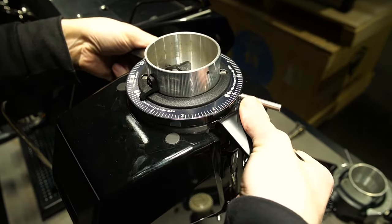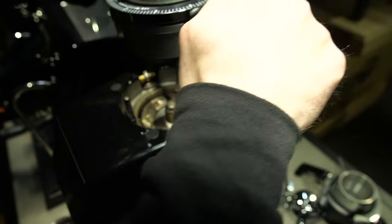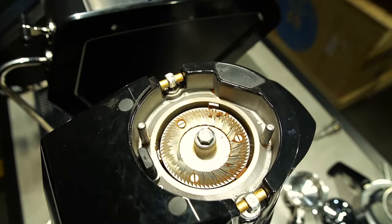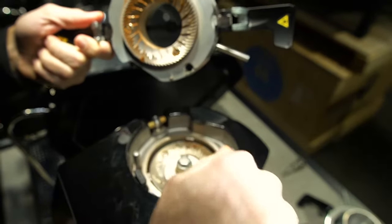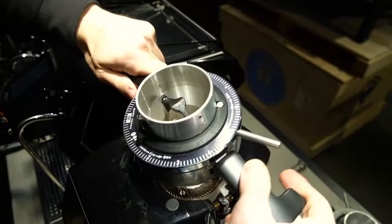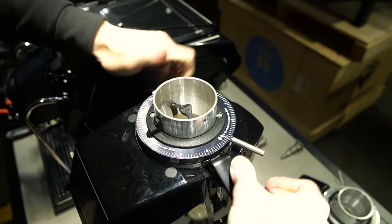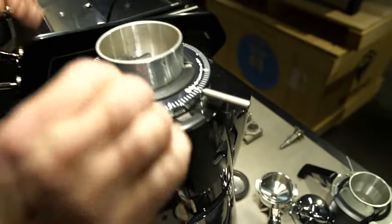You literally just flip this up and lift, and you've got immediate access to your burr chamber. You vacuum this out, brush it out, put it back on, snap it back in, and you're done.